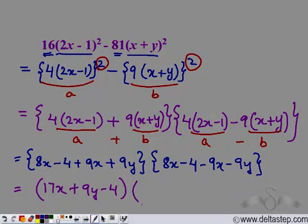For the second part we have 8x minus 9x so negative x, we have negative 9y and we have negative 4.